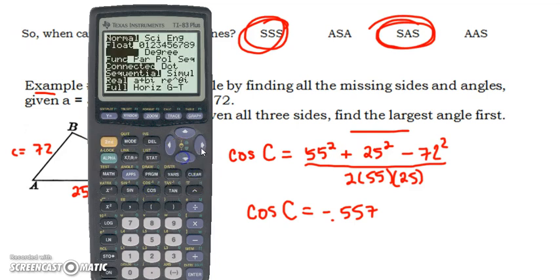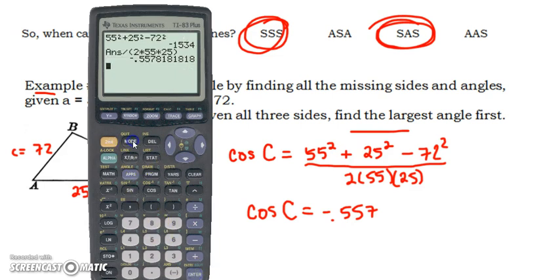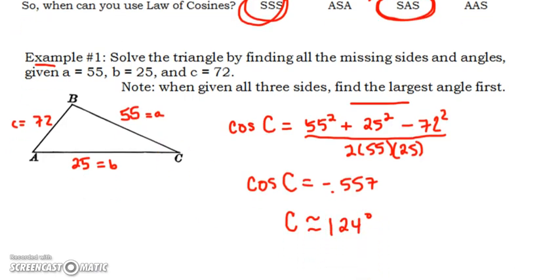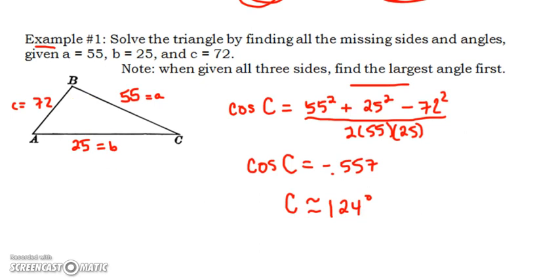We are going to take the inverse. But before I do that, I'm going to go back and check my mode. If I did that with radians, my answer wouldn't make sense. Let me go to the mode, fix that, and then second cosine inverse, second answer. So I'm going to drag that whole answer down into my calculator, and it's going to tell me that C is approximately 124 degrees.